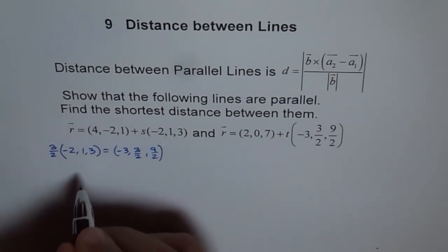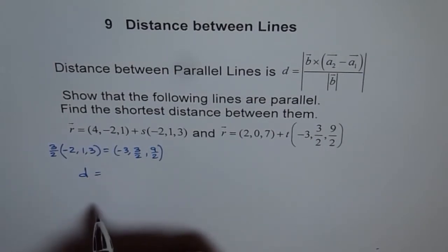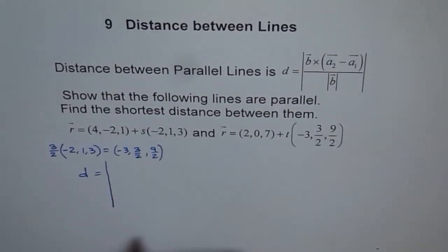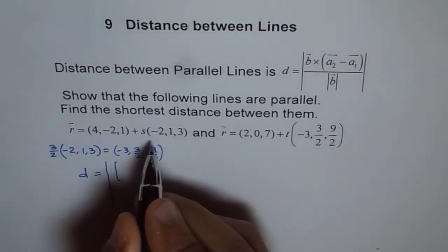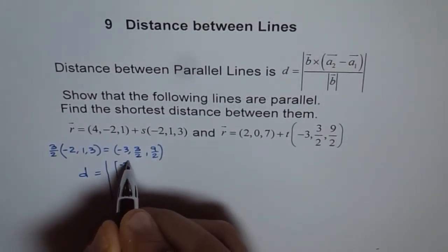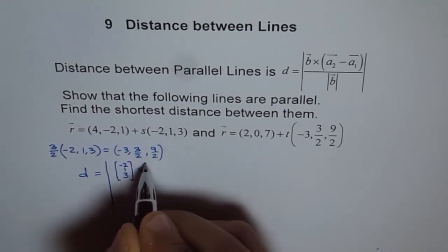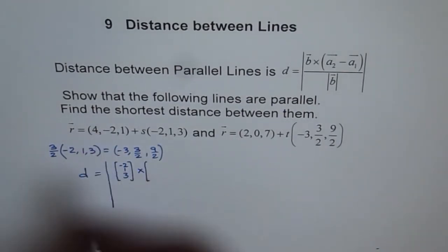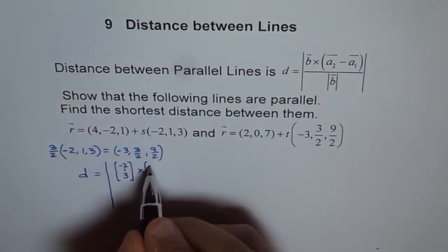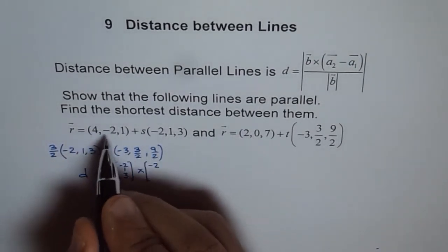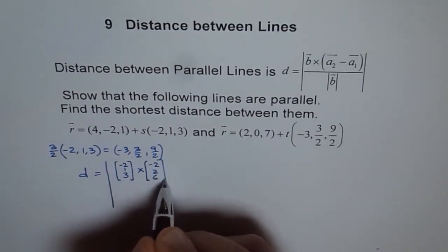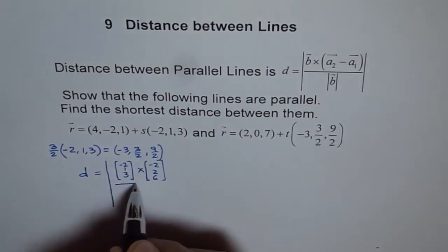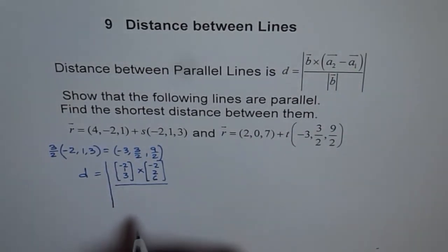Now, the second part is to find the distance. The distance is the absolute value — distance is always positive. We use the formula with b equals minus 2, 1, 3, and take the cross product with the vector a2 minus a1. So if I do this: 2 minus 4 gives minus 2; 0 minus of minus 2 is plus 2; and 7 minus 1 is 6. So that is a2 minus a1, divided by the magnitude of b.